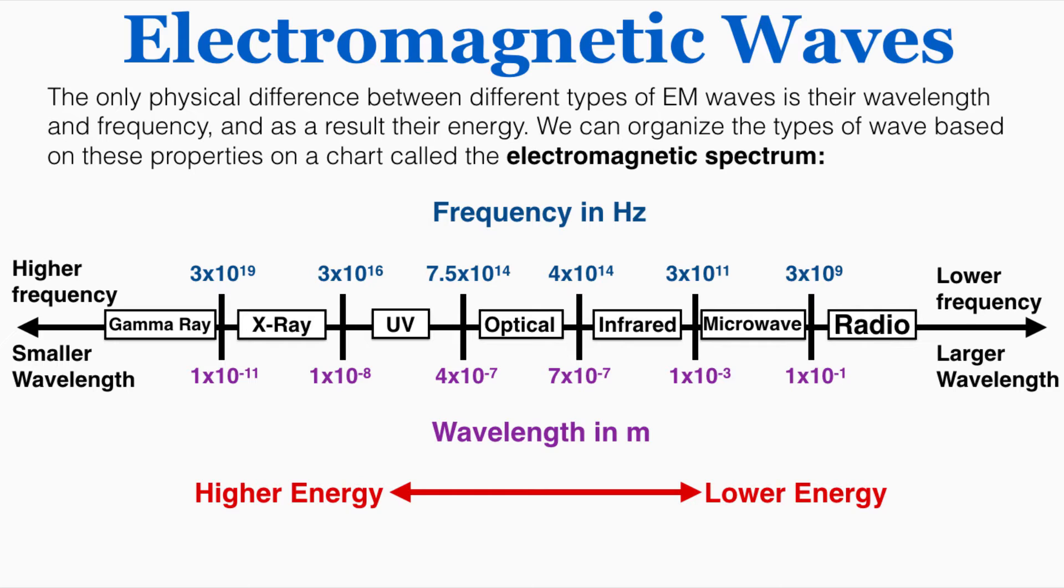Optical waves, for example, actually take up a very small sliver of the EM spectrum compared to most other types of waves. I just spaced them out evenly so they're easier to see. We're now going to go through each type of wave and talk about its properties.